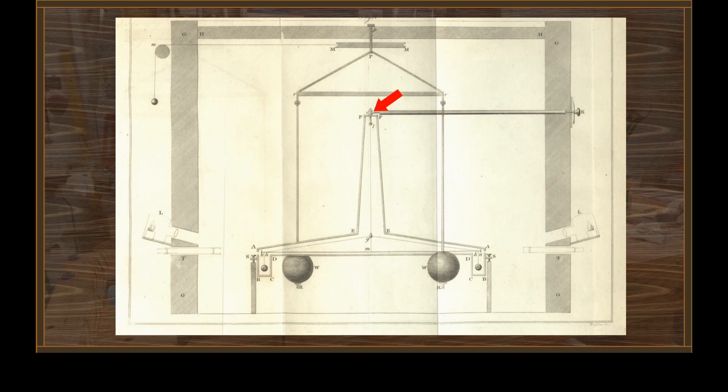Now that's the device that allowed Cavendish to rotate the torsion wire and center the torsion beam inside the enclosure, and it's very important to do that. The clearances inside are very tight. Those small masses, if the beam is perfectly centered in the enclosure, can only move about three quarters of an inch before they contact the walls of the enclosure. So we have to have a way to make fine adjustments to the position of that beam, and that's what that device did.